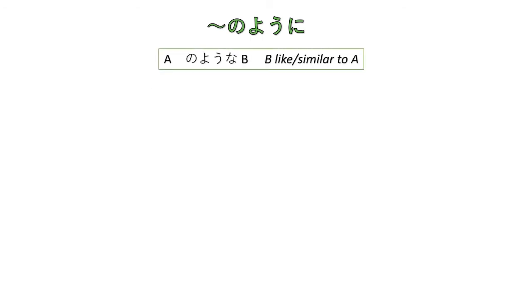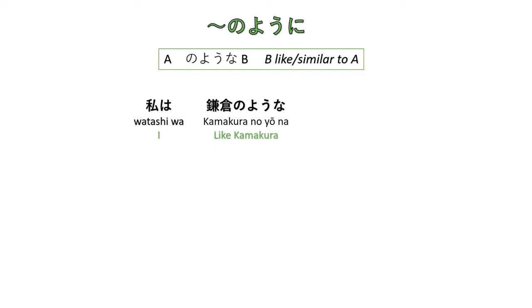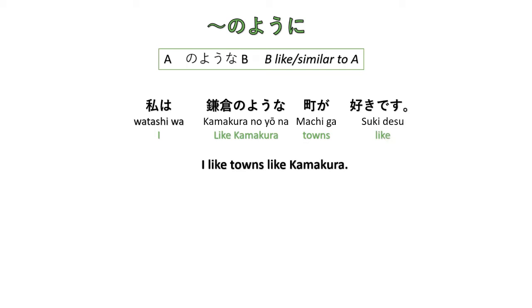We can also use のような (noyona), which means 'B like or similar to A'. For example: Watashi wa Kamakura no yona machi ga suki desu — I like towns like Kamakura. Here A represents Kamakura and B is machi (town), so Kamakura no yona machi means 'a town similar to Kamakura'.